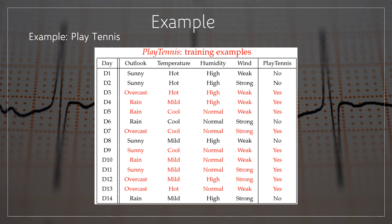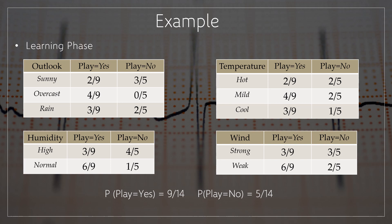I have taken an example of a play tennis training dataset, where we have days ranging from D1 to D14, outlook of sunny, overcast, rain; temperature of hot, mild, cool; humidity of high, normal; wind of strong, weak; and play tennis of yes, no. In the learning phase we split the examples for outlook, temperature, humidity, and wind with play equal to yes and play equal to no.